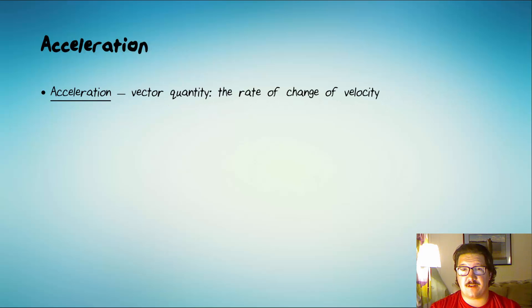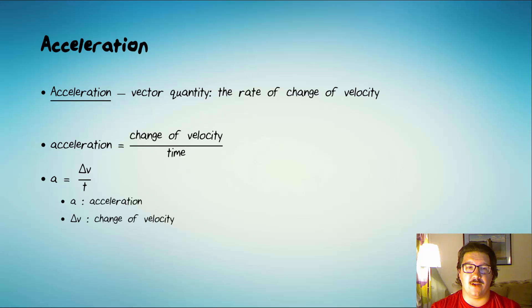Acceleration is a vector quantity and it's defined as the rate of change of velocity. We can say that acceleration is the change of velocity divided by time. We normally write it like this, a equals delta v over t. Where a stands for acceleration, delta v stands for velocity, and t stands for time.